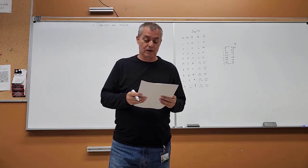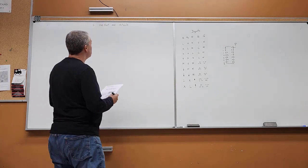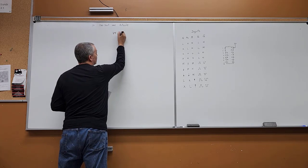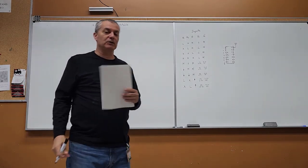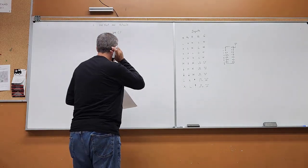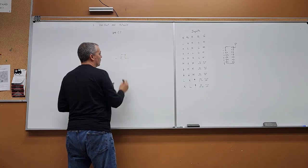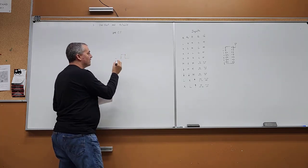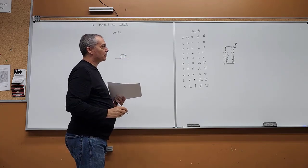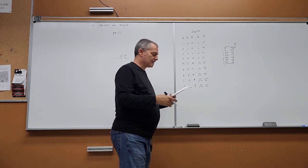The chip we'll be using is the 74121. The data sheet is on Brightspace. It's a one-shot, so basically what's going to happen is when you trigger it, it will create a pulse, and the width of that pulse is determined by the RC network which you're going to hook up to the chip.